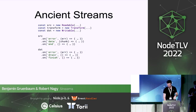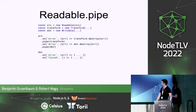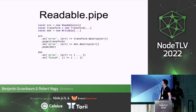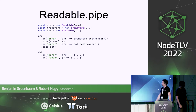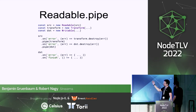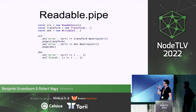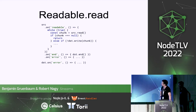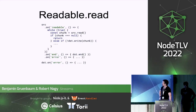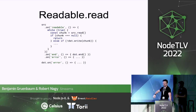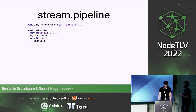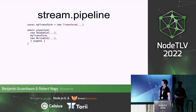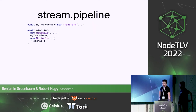To improve that situation we got readable.pipe, which is also not perfect because you have to propagate errors yourself. That's still too complicated, especially if you have multiple transforms. Later we also got readable.read which made reading a bit easier, but composing streams is still very complicated. Then we added pipeline, a helper where you just pass in streams and pipeline figures out how to pipe and connect them correctly.